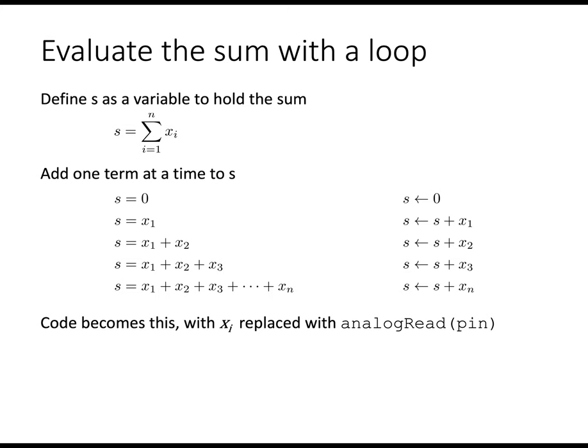Inside the code, instead of xi, that is some predefined value, we have analog read as the source of those values. Here's a simple loop. Outside the loop, we set the sum equal to zero. We loop through n readings. Each time through the loop, we get a new reading from the analog read function. And then in the sum equals sum plus reading, we accumulate the sum.